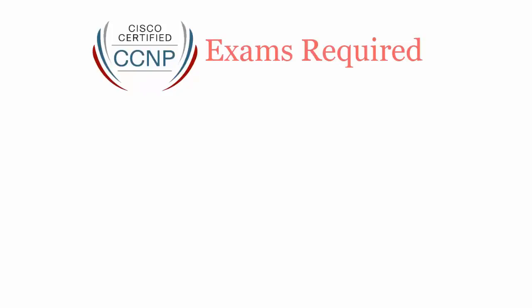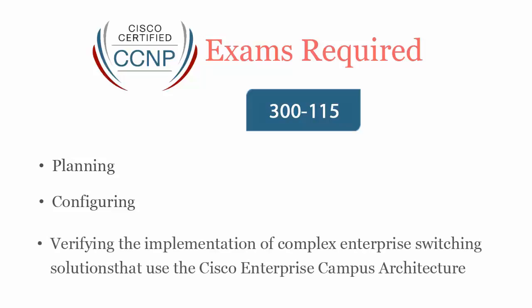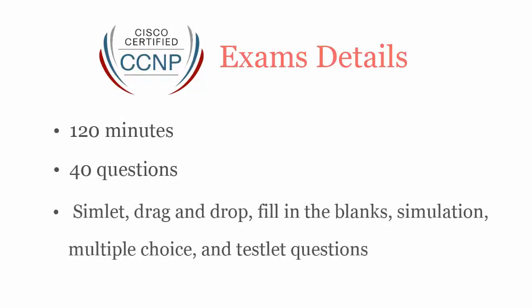To be a Cisco CCNP certified professional, you will have to pass the 300-115 exam. It covers planning, configuring and verifying the implementation of complex enterprise switching solutions that use the Cisco Enterprise Campus Architecture. In 120 minutes, you have to complete 40 simlet, drag and drop, fill in the blanks, simulation, multiple choice and testlet questions.